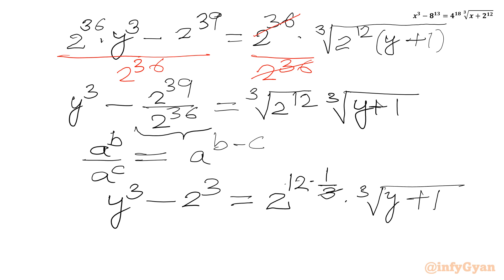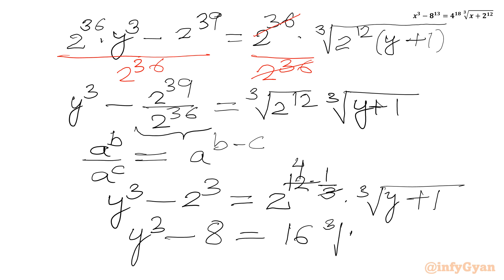We can cancel 12 with 3 to get power 4. So we write y³ − 8 = 16 × ∛(y+1). Now we will split 16 as 8 × 2.